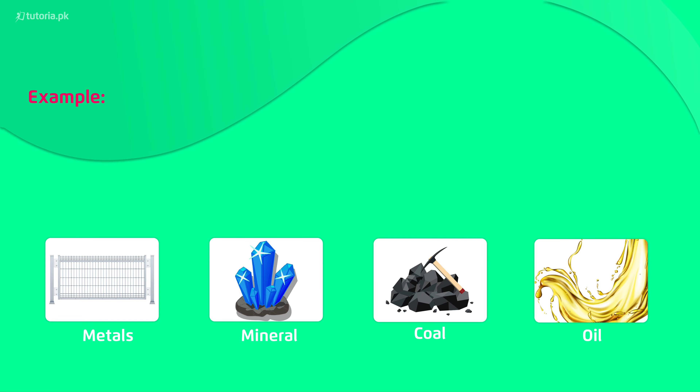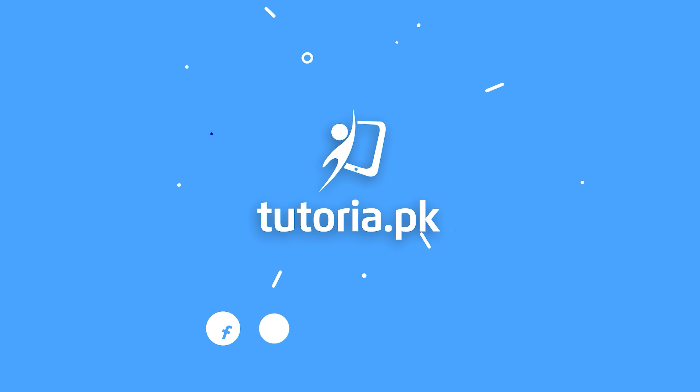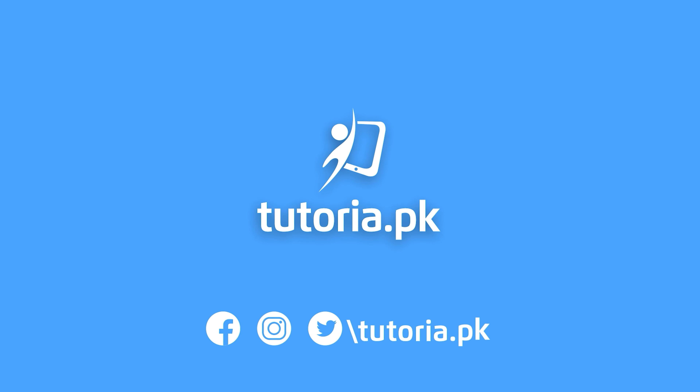So these are the two types — renewable and non-renewable resources. These are the resources that are possible to get from the earth. Thank you.